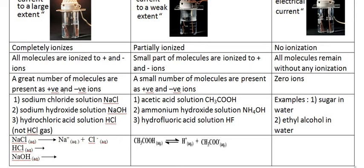In the strong electrolyte, all molecules are ionized to positive and negative ions. In the weak electrolyte, only a small part of molecules are ionized to positive and negative ions, and most of the molecules remain as neutral molecules without any dissociation. In the non-electrolyte, all molecules remain without any ionization — so no ions at all, zero ions.